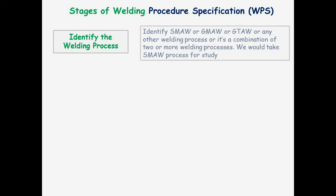Let us discuss the stages of Welding Procedure Specification, WPS. First of all, identify the welding process — that is, identify SMAW, GMAW, GTAW, or any other welding process, or a combination of two or more welding processes. We would take the SMAW process for our study.